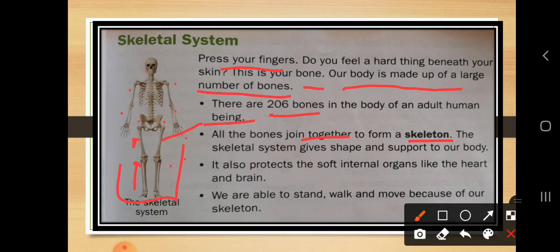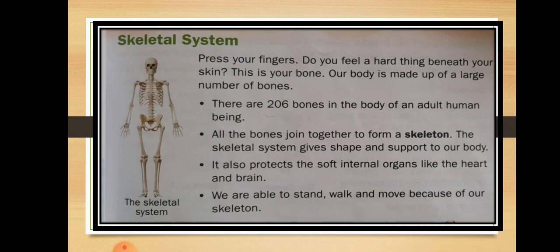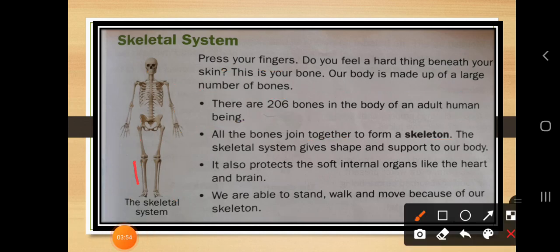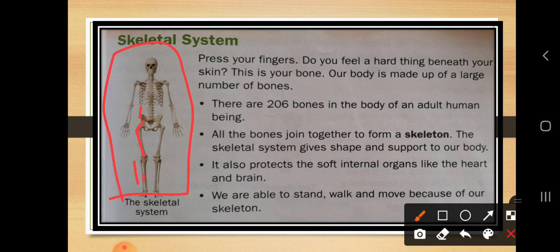Many bones are in our human body. When these bones are joined together — one bone joined to the upper part, again joined together to form the stomach part, then the backbone and upper bone — all these bones join together to form a skeleton.